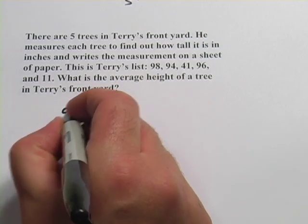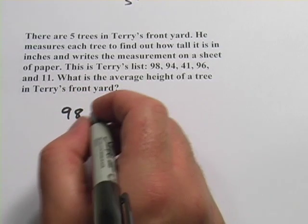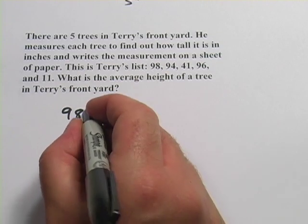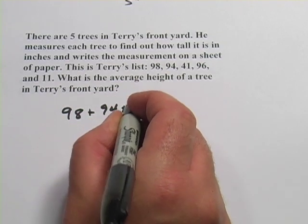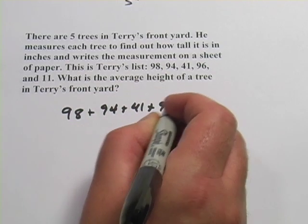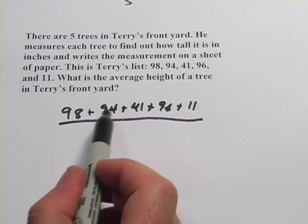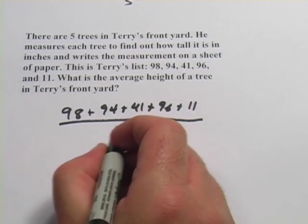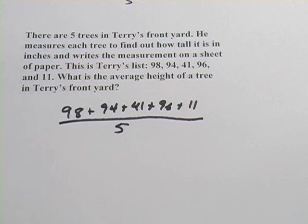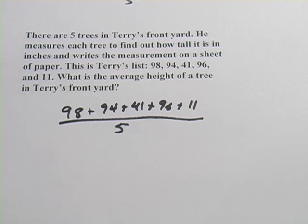To figure out an average, we have to add them all together and divide by the number of items there are. So 98 plus 94 plus 41 plus 96 plus 11, divided by five. I take out my calculator and start adding those up: 98 plus 94 plus 41 plus 96 plus 11, then divide that by five, and I get 68.